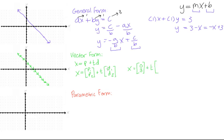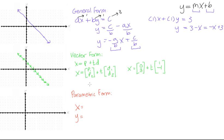More explicitly, x equals point (p1, p2) plus t times direction vector (d1, d2). In our case, that's (0, 3) plus t times (1, -1). You can test this: adding one times the direction vector gives (1, 2); adding three times gives (3, 0). Every possible point on this line can be described in vector form with this equation.